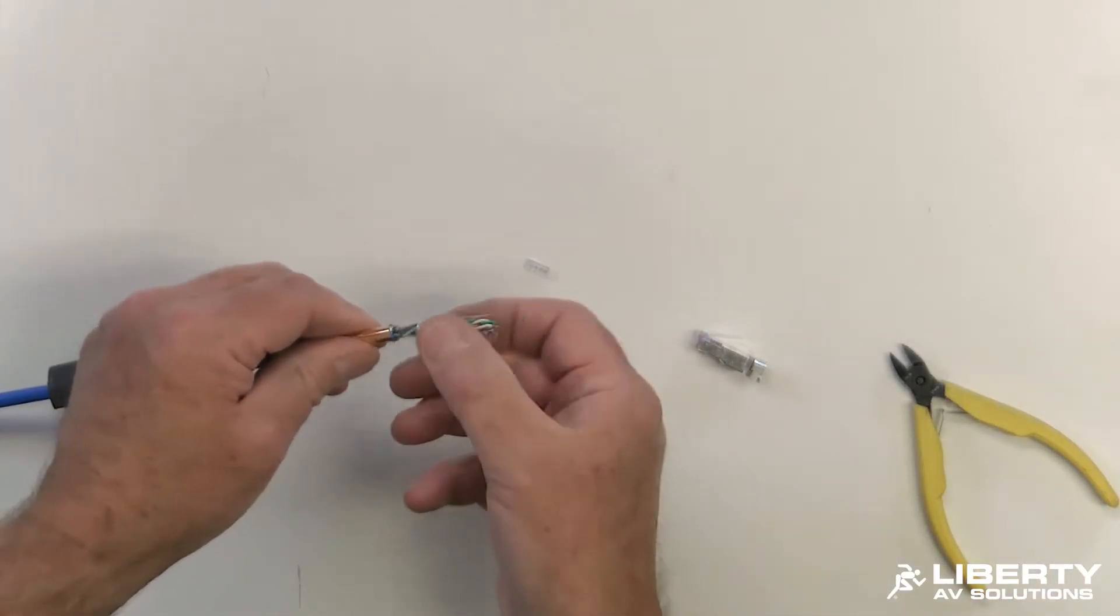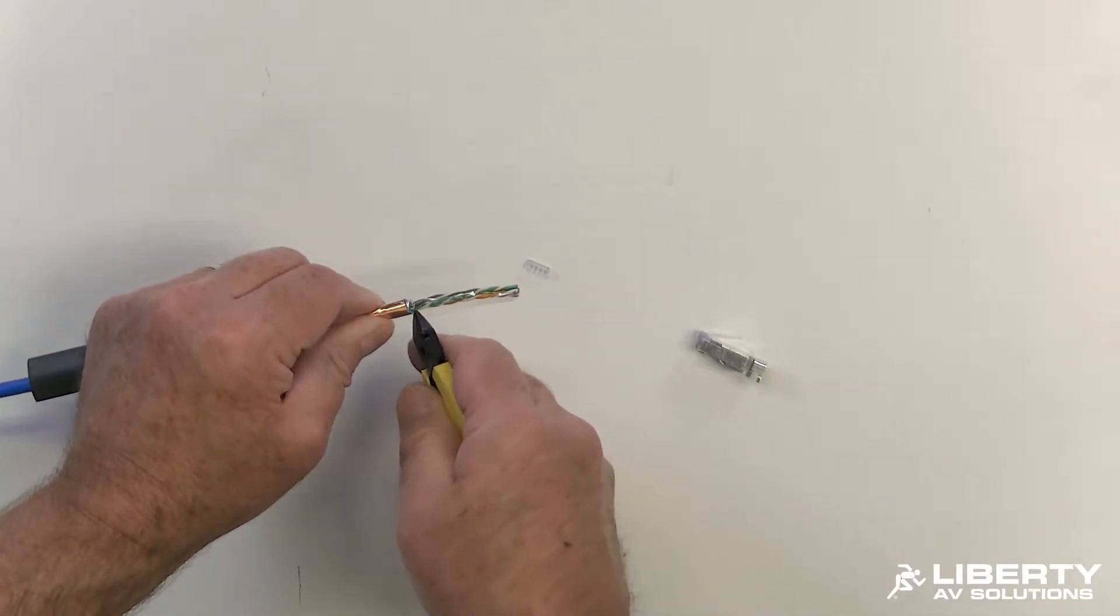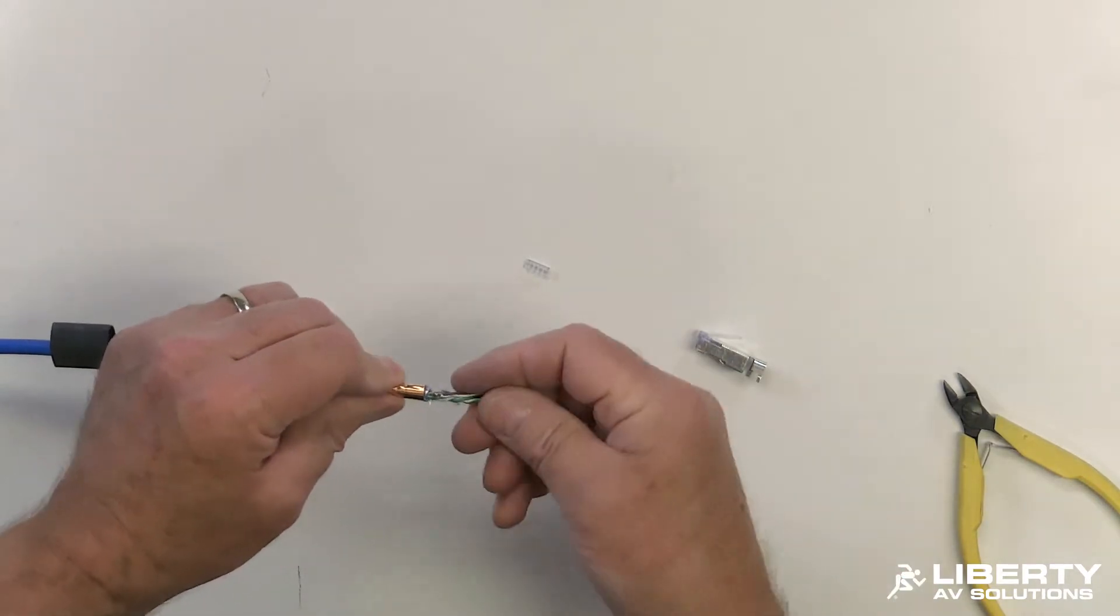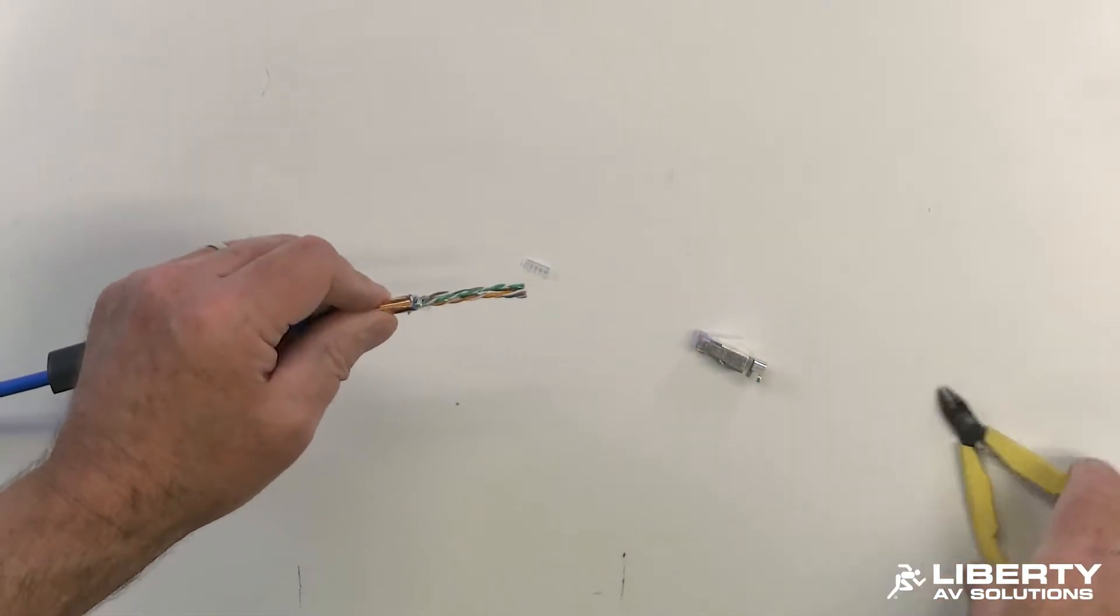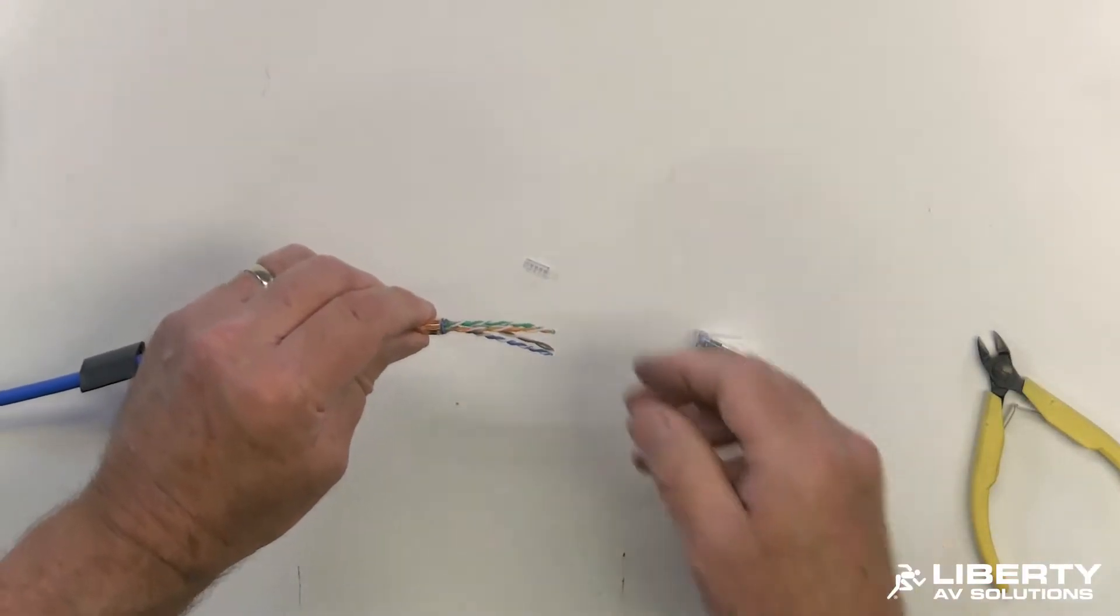Now, sometimes Category 5E cables will have a binder and sometimes they won't. This particular one does. I'm going to go ahead and, same thing I did with the shield, just nip it at the bottom and off it comes. Of course, it's held by static too. Alright, got nice and tight.